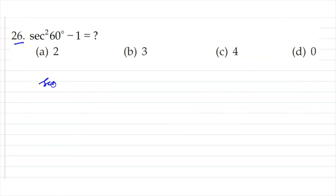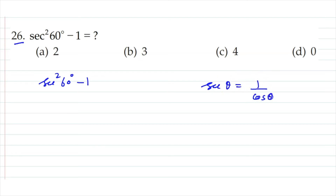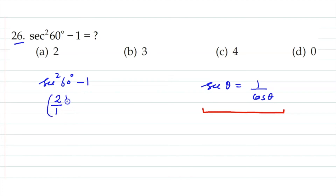Question 26: sec² 60° minus 1. We need to know that sec θ is the reciprocal of cos θ. Cos 60° is 1/2, so sec 60° is 2/1, which is 2. Squaring gives 4, and 4 minus 1 equals 3. This is an easy question.